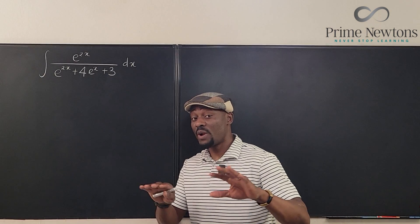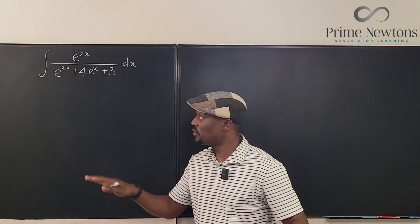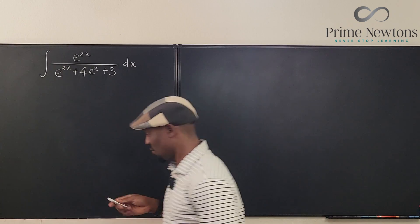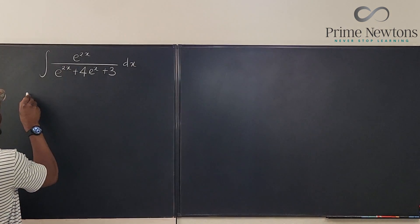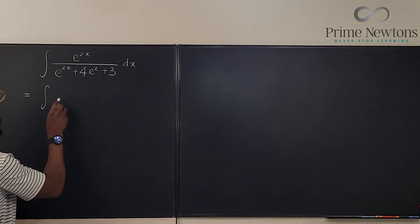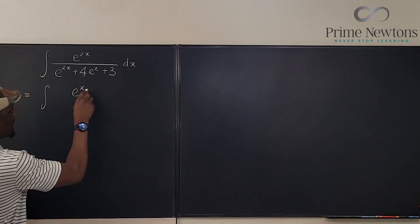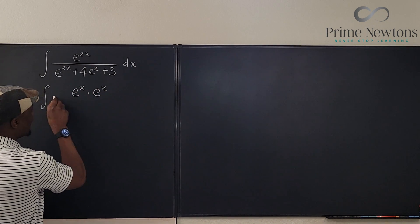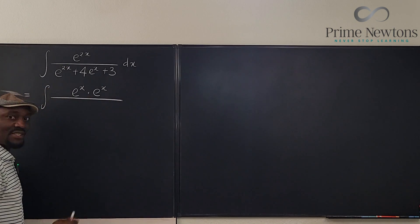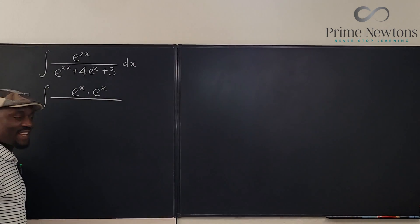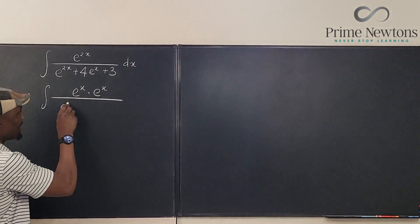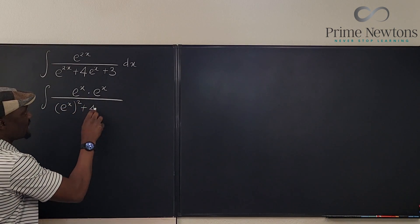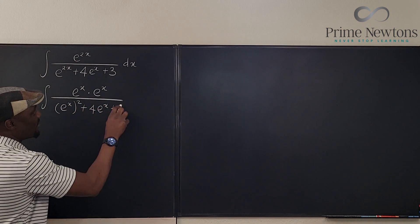To make this clearer, I'm going to rewrite the numerator of the integrand. This is equal to the integral of e to the x times e to the x — that's the e to the 2x — over e to the x squared plus 4e to the x plus 3.